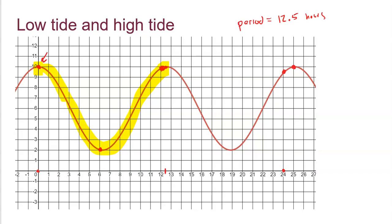One more concept to point out is what we call the midline. If we have a maximum of 10 and a minimum of 2, the difference is 8, and half of 8 is 4. Coming up 4 from 2 gives us 6, and going down 4 from 10 also gives us 6. So 6 is the midline. The midline is where the function crosses as it moves between the maximum and minimum values — it's like cutting the vertical range of the period in half.